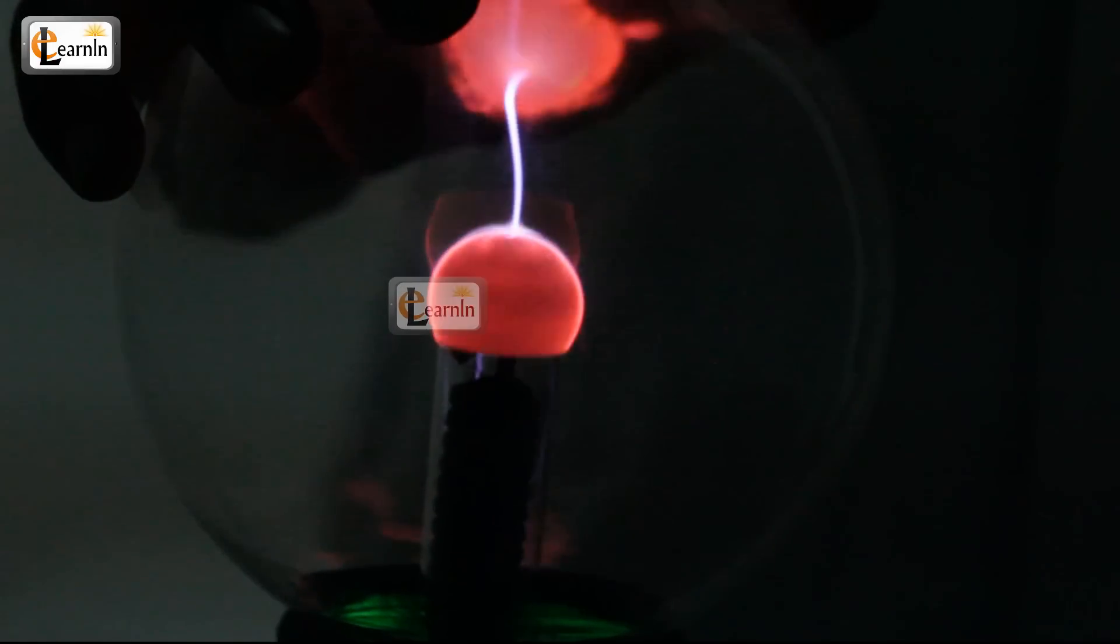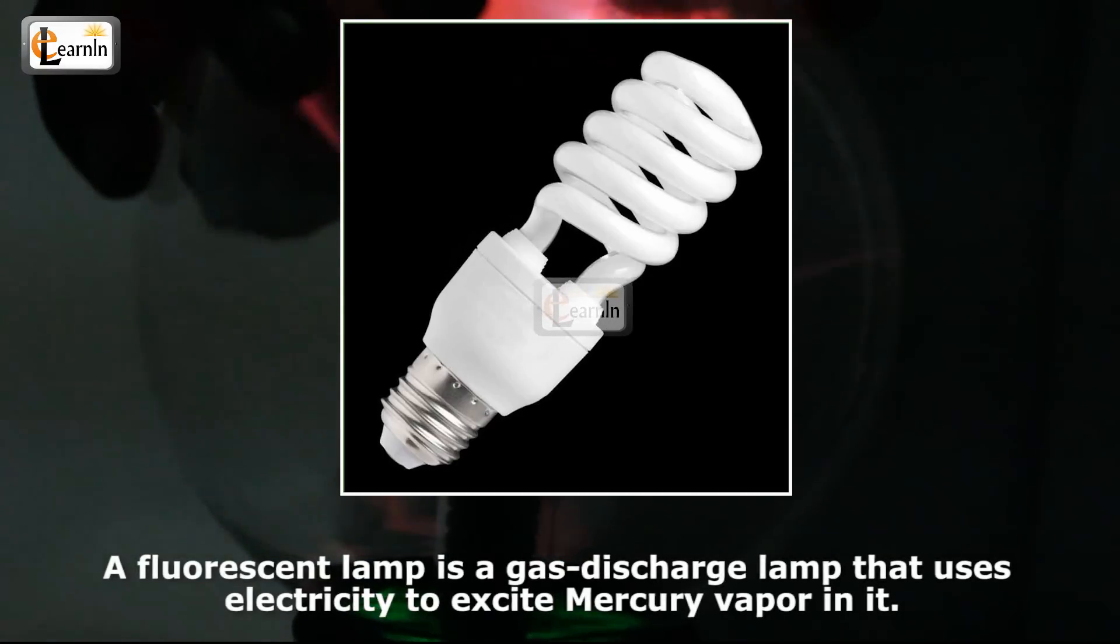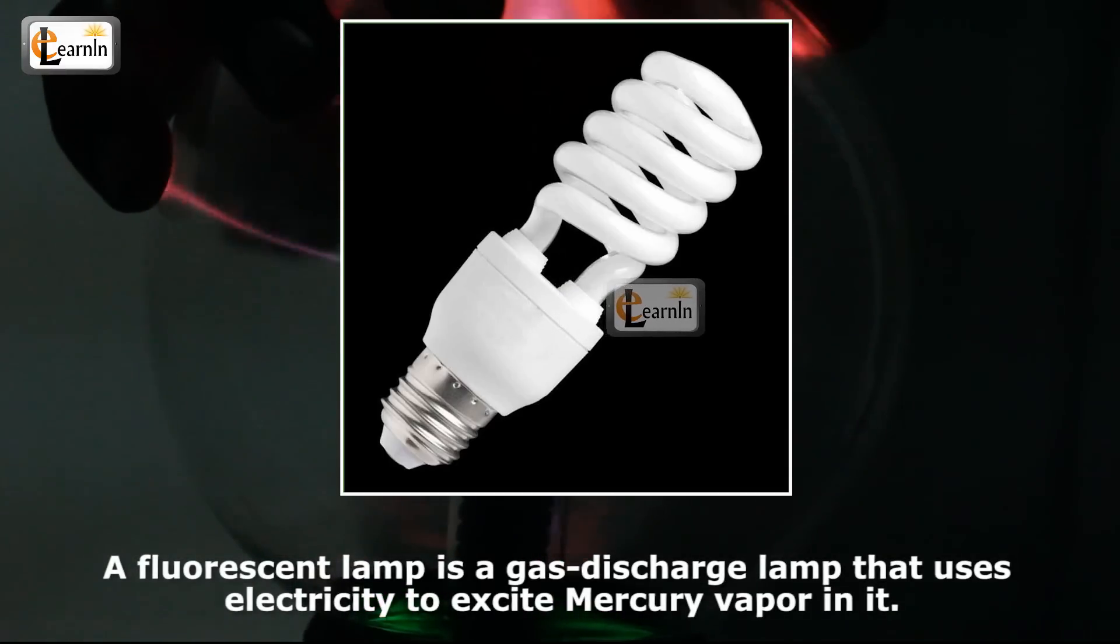A fluorescent lamp, or fluorescent tube, is a gas-discharge lamp that uses electricity to excite mercury vapor in it.